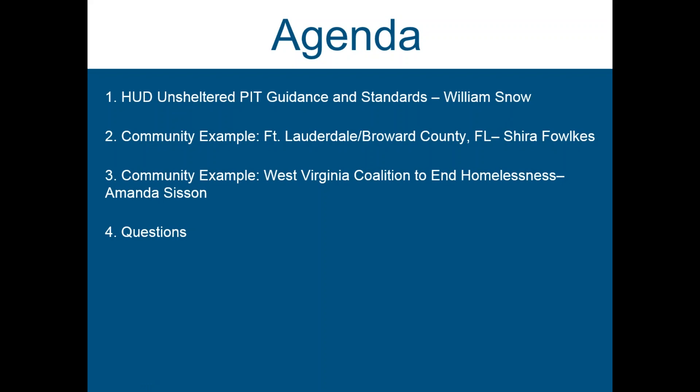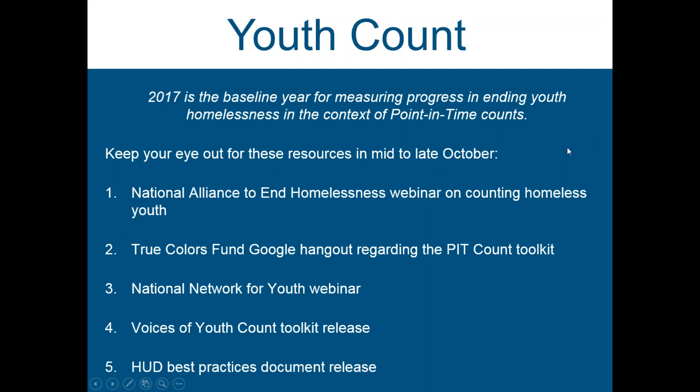Before I turn it over to William: the 2017 point-in-time count is going to be the baseline year for using point-in-time data and measuring progress towards ending youth homelessness. So it's critical that the 2017 point-in-time count produce a quality baseline. Away Home America is working with a variety of partners, including the Alliance, to ensure that CSCs and runaway and homeless youth providers work together to identify youth who meet HUD's definition for the count. There are a number of resources coming out this fall, particularly throughout October, to help communities achieve the best youth count possible.